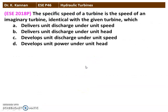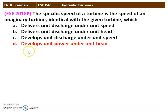The next question is from the 2018 question paper. The specific speed of a turbine is the speed of an imaginary turbine, identical to the given turbine, which develops unit power under a unit head. That is the correct answer.